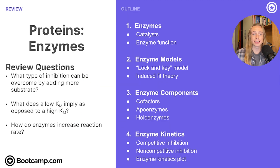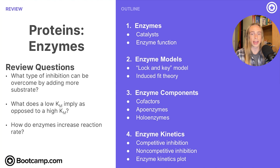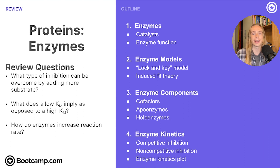We just had a really dense lesson on enzymes, so let's do a few quick review questions. First, what type of inhibition can be overcome by adding more substrate? Second, what does a low Km imply as opposed to a high Km value? And lastly, how do enzymes increase a reaction rate? If you can answer these questions, you're well on your way to success. Everybody be sure to have a great day, and I will see you in the next one.